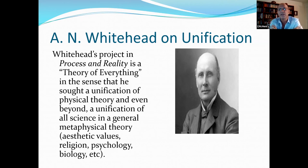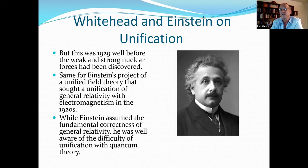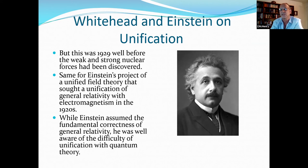And so Whitehead, I thought, is really the genius of seeing how to generalize concepts that would produce unification. But this was 1929, well before the weak and strong nuclear forces had been discovered, and it was the same problem for Einstein in attempting a unified field theory that sought a unification of general relativity and electromagnetism in the 1920s. While Einstein assumed the fundamental correctness of general relativity, he was well aware of the difficulty of unification with quantum mechanics. Perhaps he didn't quite realize just exactly how difficult it would be.